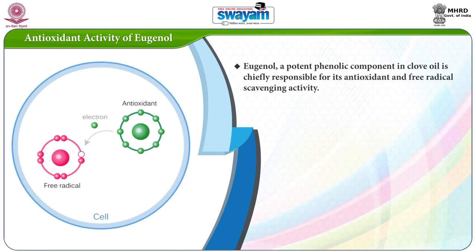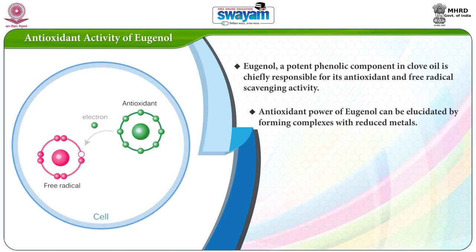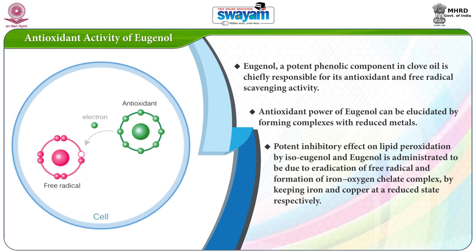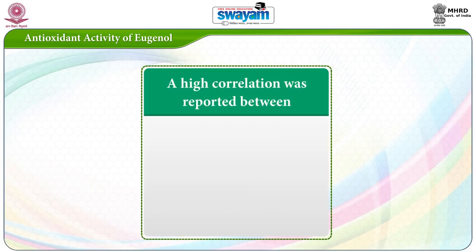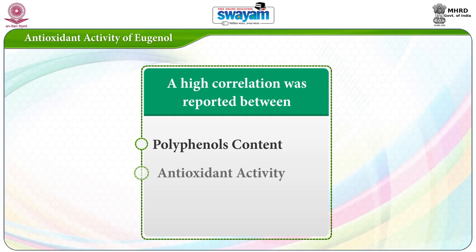Eugenol, a potent phenolic component in clove oil, is chiefly responsible for its antioxidant and free radical scavenging activity. Antioxidant power of eugenol can be elucidated by forming complexes with reduced metals. Potent inhibitory effect on lipid peroxidation by isoeugenol and eugenol is attributed to eradication of free radicals and formation of iron-oxygen chelate complex by keeping iron and copper at a reduced state respectively. High correlation was reported between the polyphenols content and the antioxidant activity.